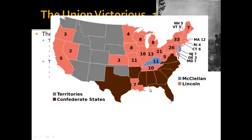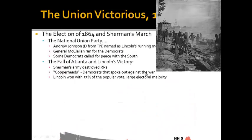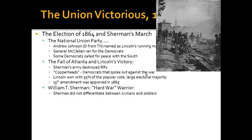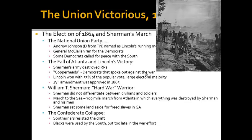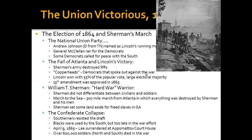The Confederate states were not voting during this time, which is why you only see Louisiana and Tennessee — because they were under control of the Union. The 13th Amendment was approved in 1865, providing for the emancipation of all slaves. Sherman did not differentiate between civilians and soldiers — his march to the sea was a 300-mile march from Atlanta in which everything along the way was destroyed. He did set some land aside for freed slaves in Georgia. The Confederacy was quickly collapsing, in large part due to Southerners beginning to resist the draft. On April 9, 1865, Robert E. Lee surrendered to Ulysses S. Grant at Appomattox Courthouse. Over 600,000 soldiers, North and South combined, died in this bloody four-year-long war.